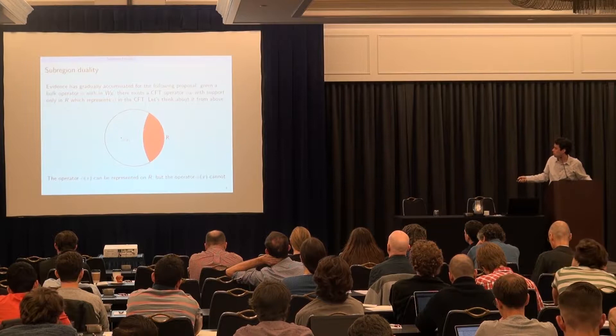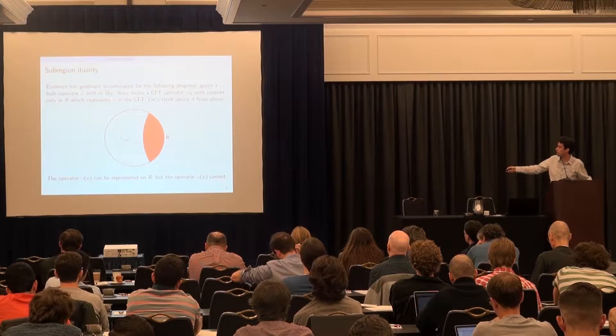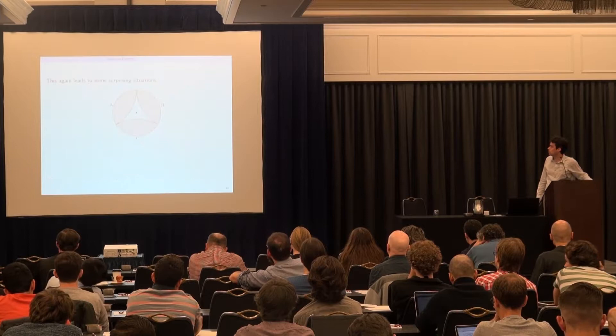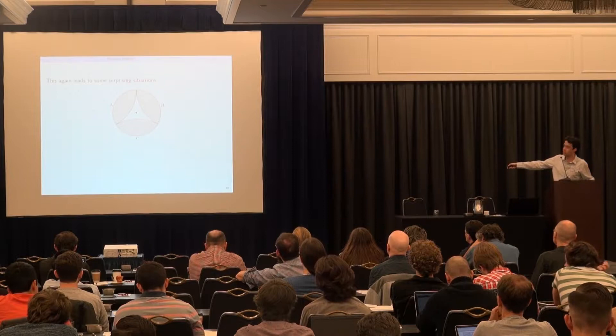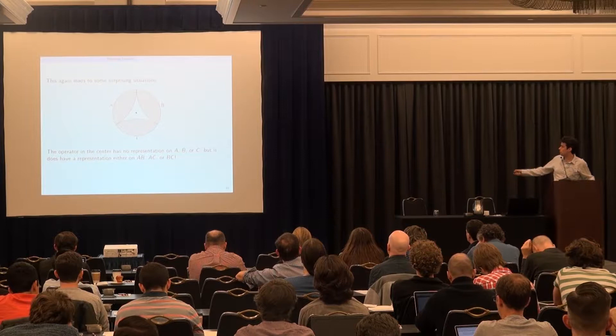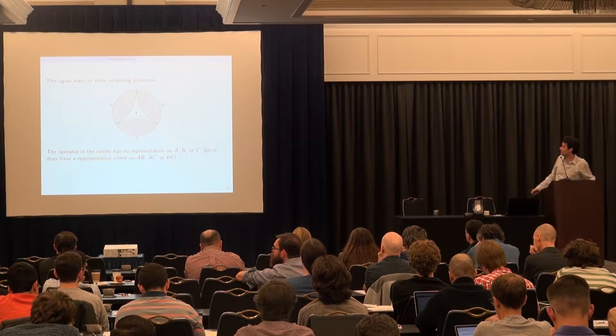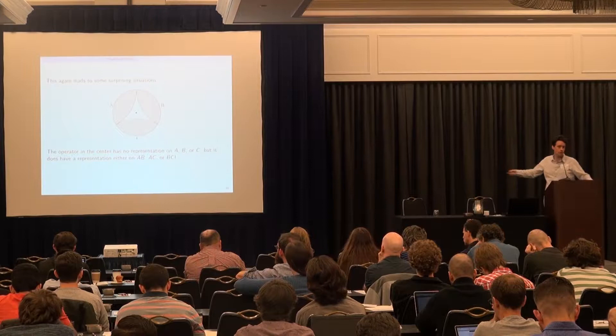This leads to some funny things. If we split the boundary into three regions A, B, and C and consider an operator phi in the center of the bulk — drawing these geodesics and seeing where the entanglement wedge is — the funny thing is that phi is not in the wedge of either A, B, or C. No single boundary region has access to this operator, but the union of any two does.